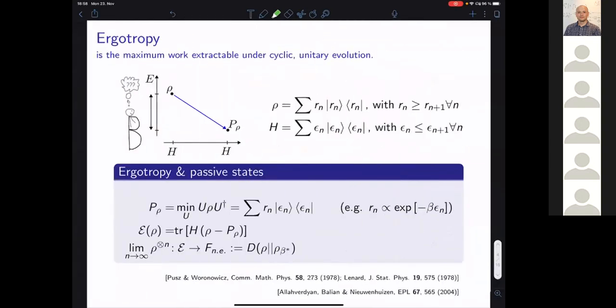And we require that this be turned off before the protocol and after the end of the protocol, after some time tau. And then this entire driving gives rise to a unitary evolution, and we can safely categorize the energy change during that evolution as work, because it's unitary.